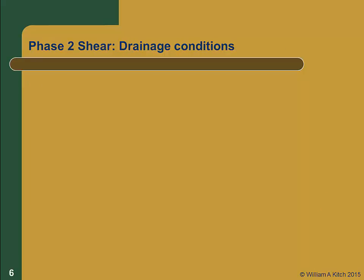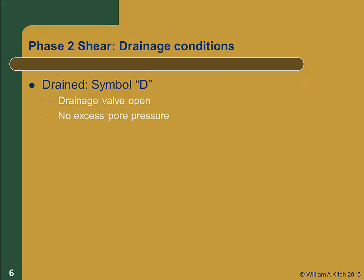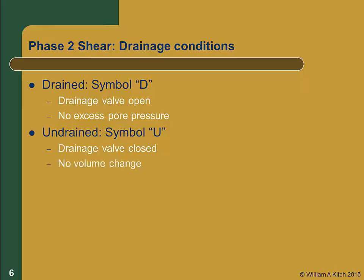During phase 2, the shear phase, the drainage valve may either be open or closed. If the valve is open, we call the phase drained and use the letter D. In a drained test, the assumption is that there are no excess pore pressures generated during shearing; we must run the test very slowly so any pore pressures have time to dissipate — particularly important for clay soils, which have low hydraulic conductivity. If we close the drainage valve during the shear phase, we have an undrained test, represented by the symbol U. There will be no volume change, and shear-induced pore pressures will be generated. We commonly measure those pore pressures, which allows us to compute the effective stress within the specimen.